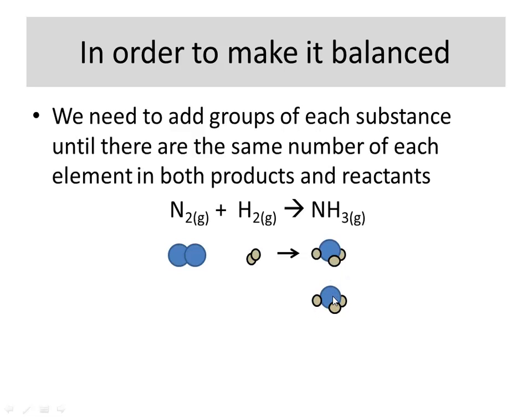So, right now, my nitrogens are balanced. I have two nitrogens in my product side and two in my reactant side. But now, I have too much hydrogen on my product side. I have six hydrogens on my product side, but only two in my reactant side. You guys might develop some instinct here. I have to add more hydrogens. And I add two more groups of hydrogens.